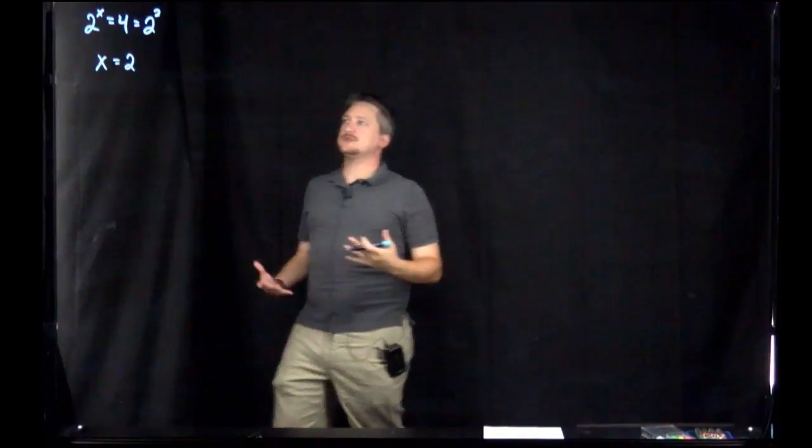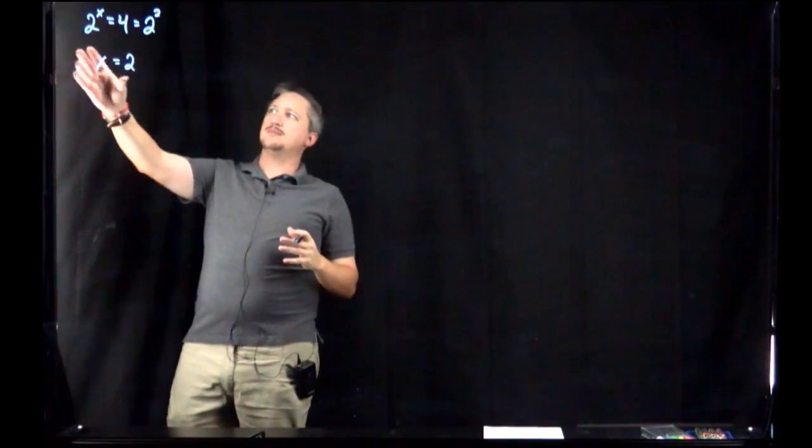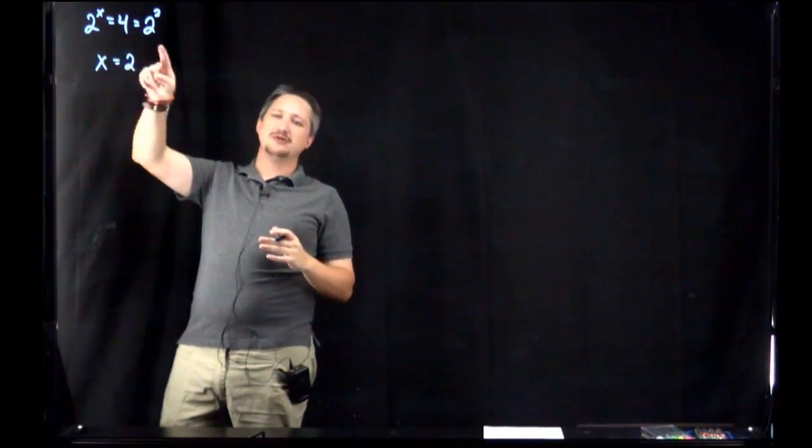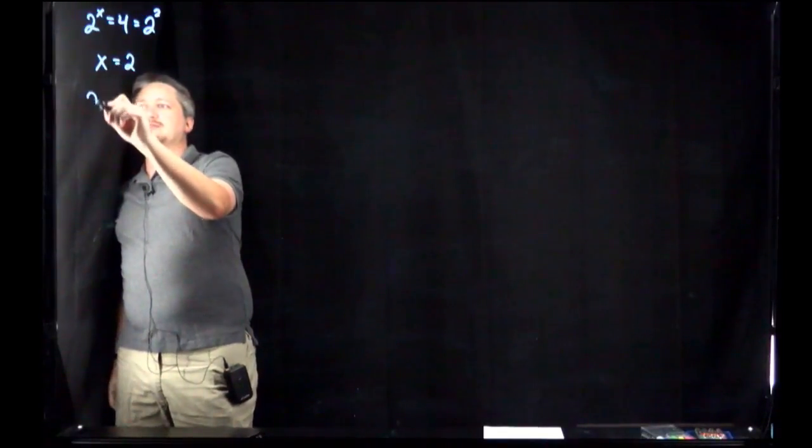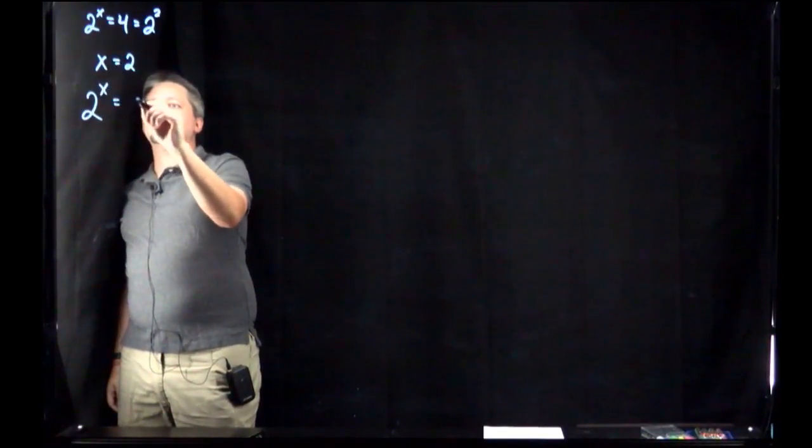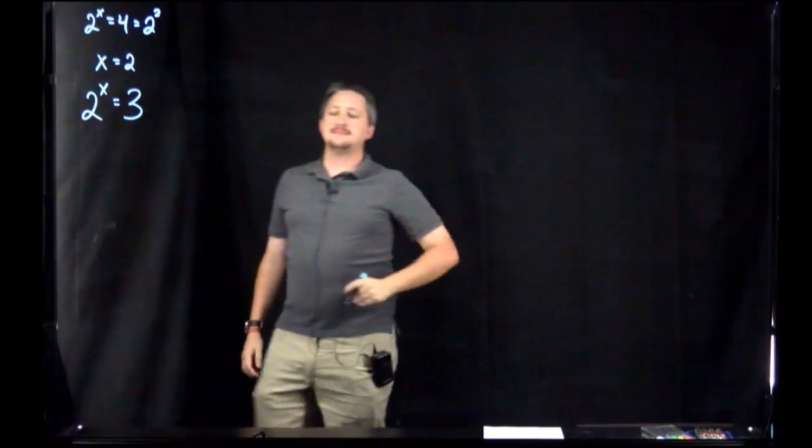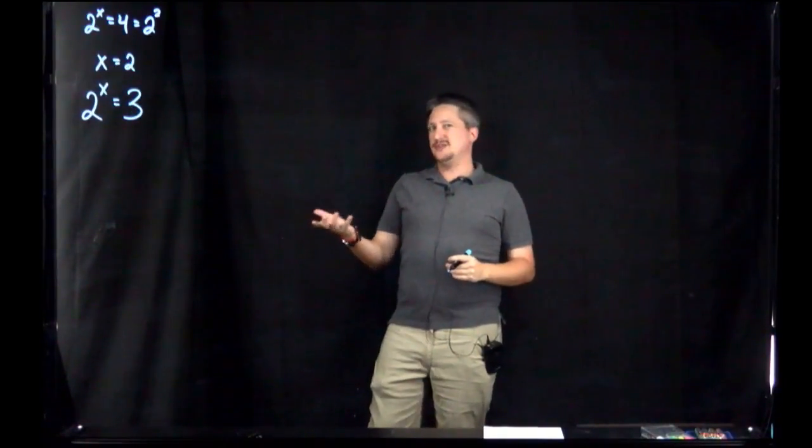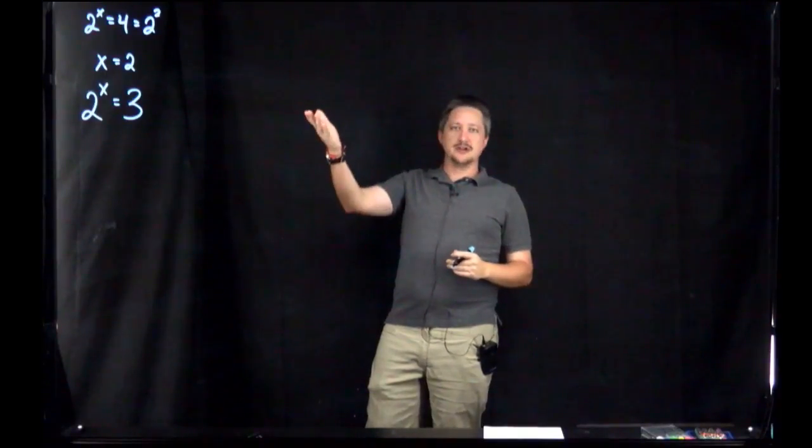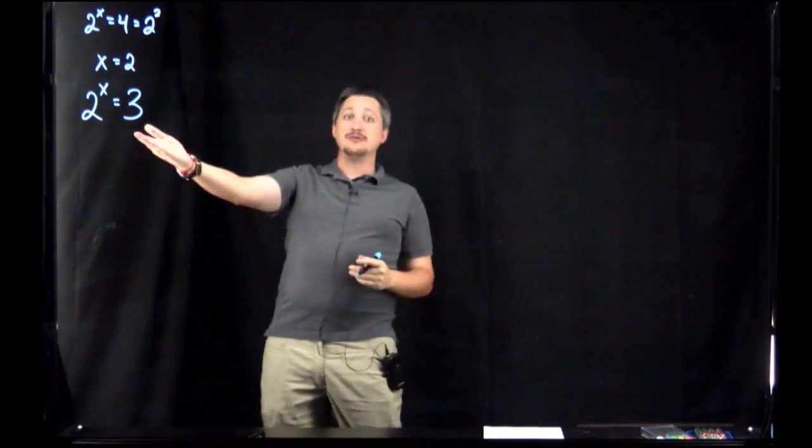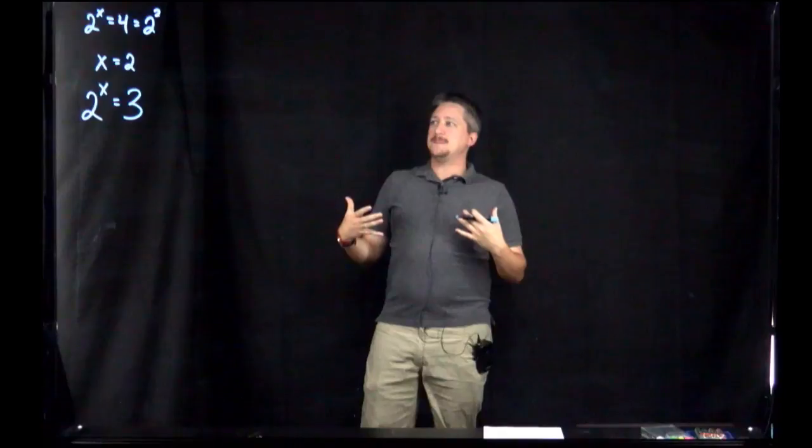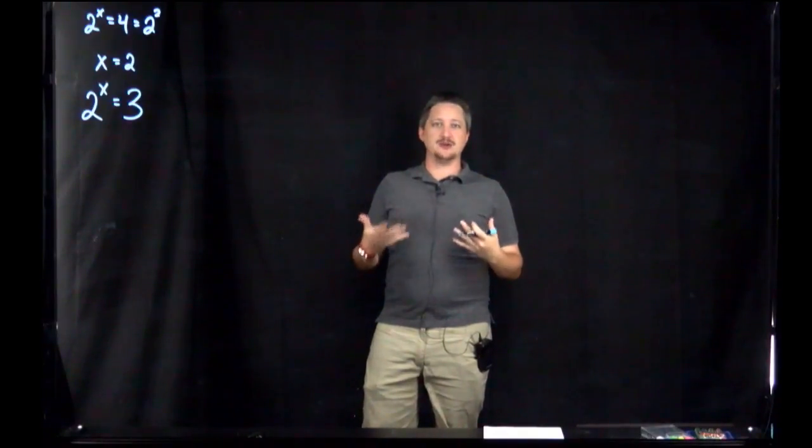But there's still a problem in that it's rare you're going to have something that works this nicely. For example, what happens if we have 2^x = 3? Now we can't solve this nicely like we did before. We can't write 3 as a power of 2, and so we're stuck coming up with an actual concrete number.